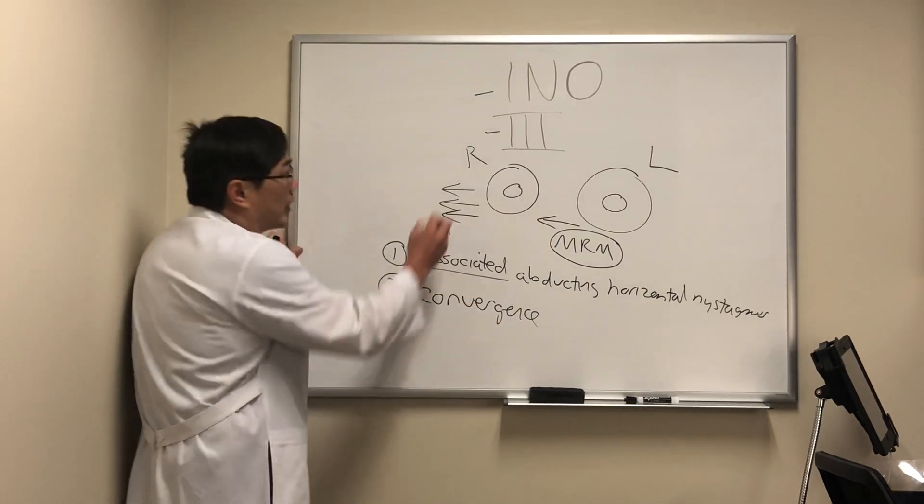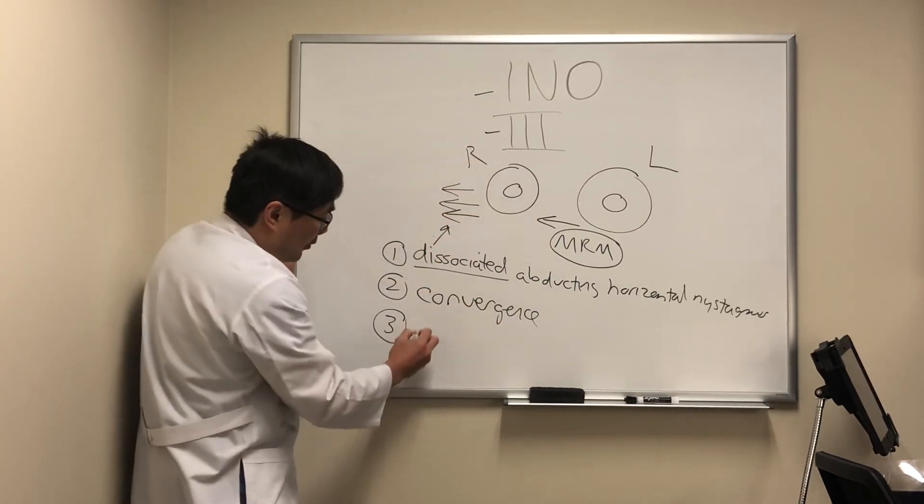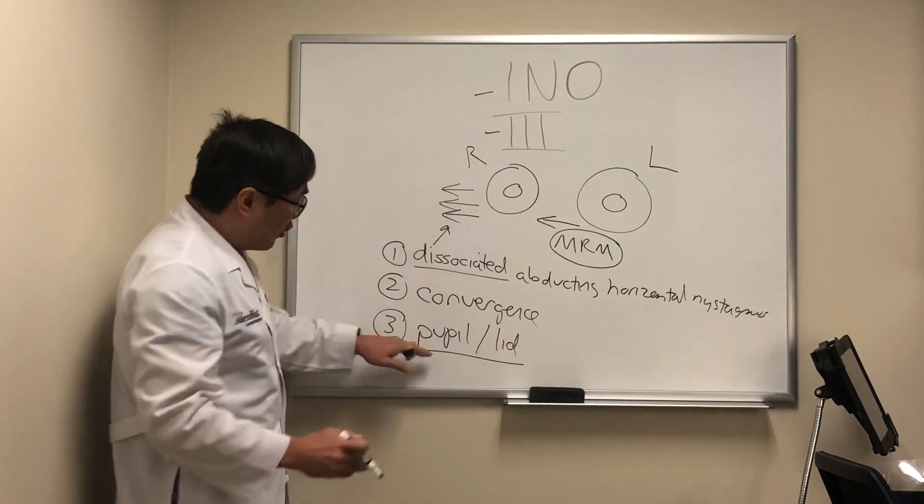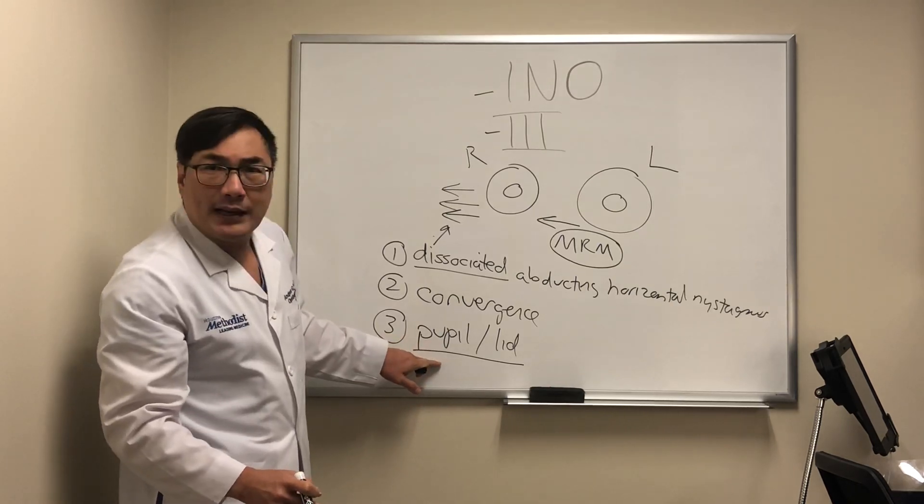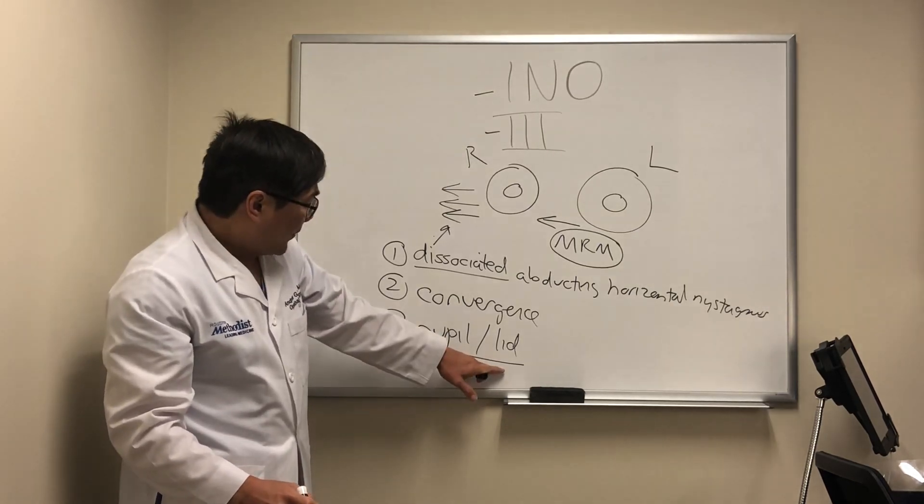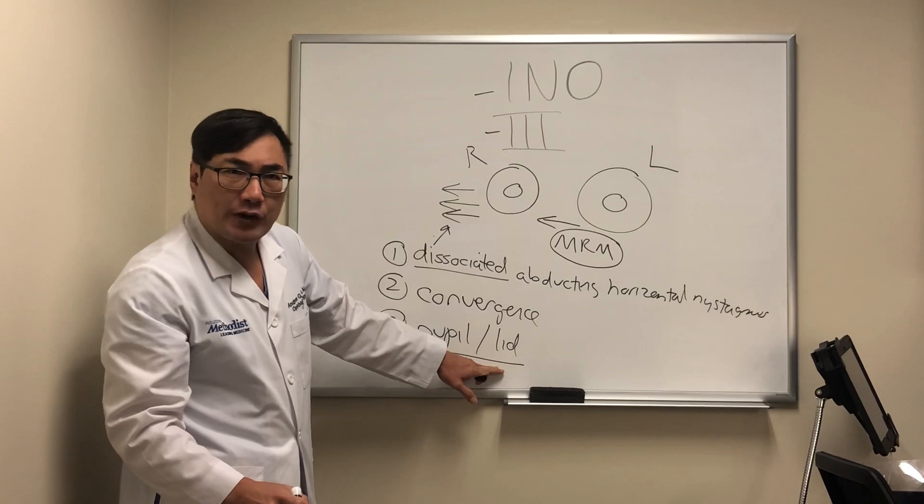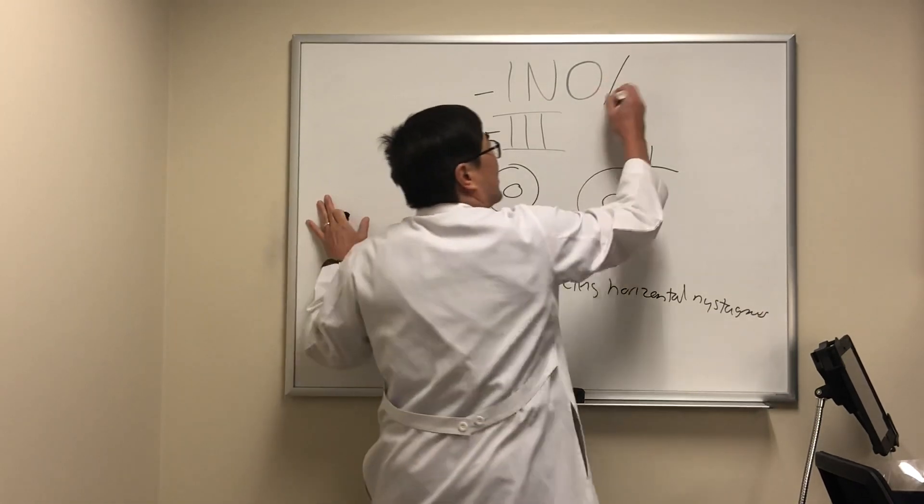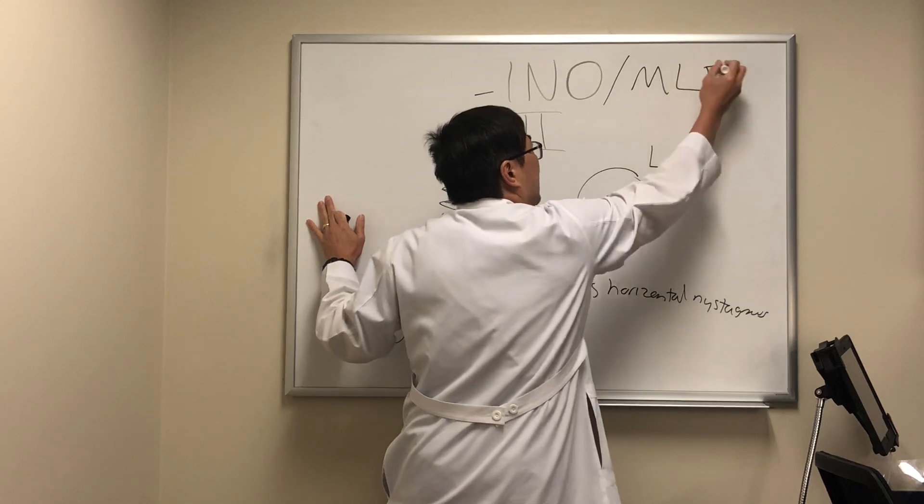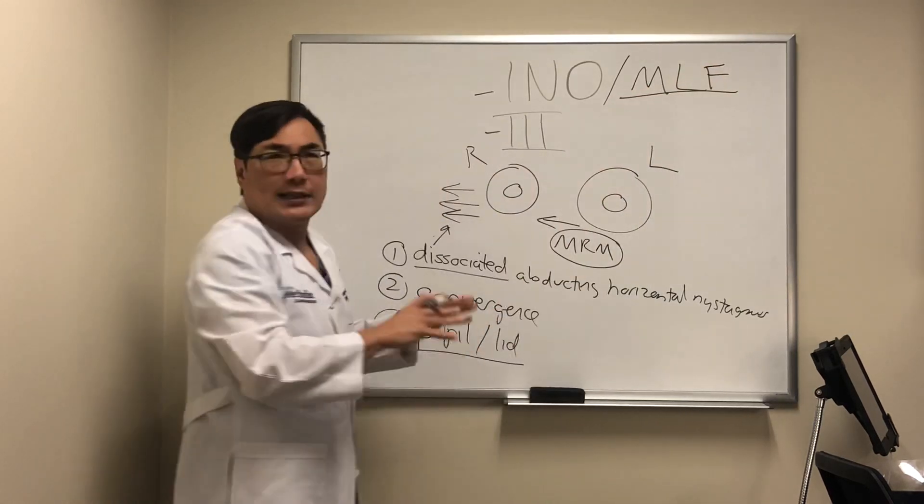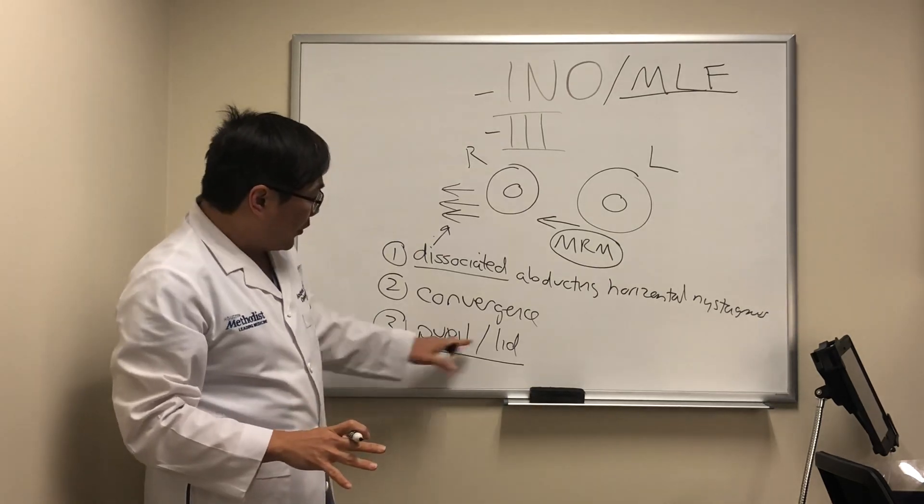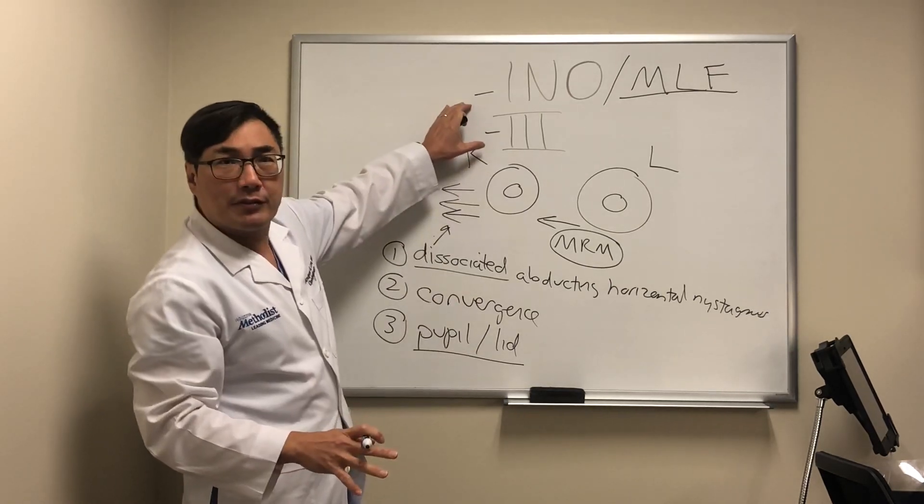And then of course, we're going to be looking for the other findings of third nerve palsy, which is the pupil and the lid. If you have a ptosis, then that can't be an INO. Or if you have pupil involvement and a dilated pupil, that cannot occur from the INO because the internuclear ophthalmoplegia is a deficit in the medial longitudinal fasciculus, which does not carry the lid or the pupil fiber. So the presence of the pupil and the lid finding would favor third nerve palsy.